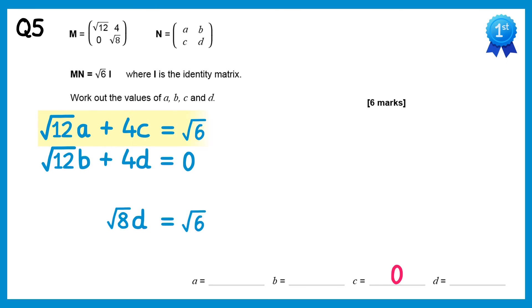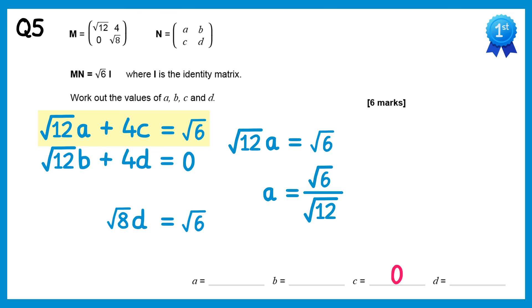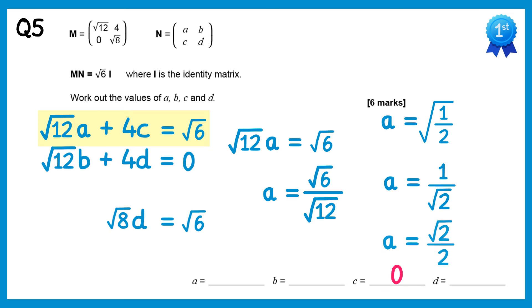Turning to the top equation: since c is 0, 4c is also 0, so root 12 times a must equal root 6. Dividing both sides by root 12 gives a equals root 6 over root 12. Thinking of 6 over 12 as one half, we can use surd rules to write this as root of one half. Splitting the fraction: square root of 1 over square root of 2 is 1 over root 2. Rationalising by multiplying by root 2 over root 2 gives root 2 over 2. So a equals root 2 over 2.